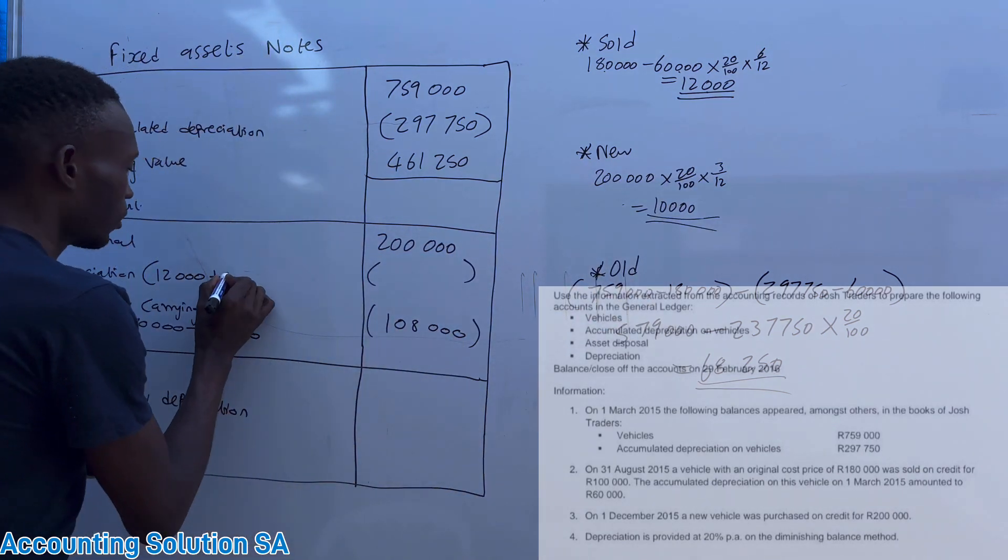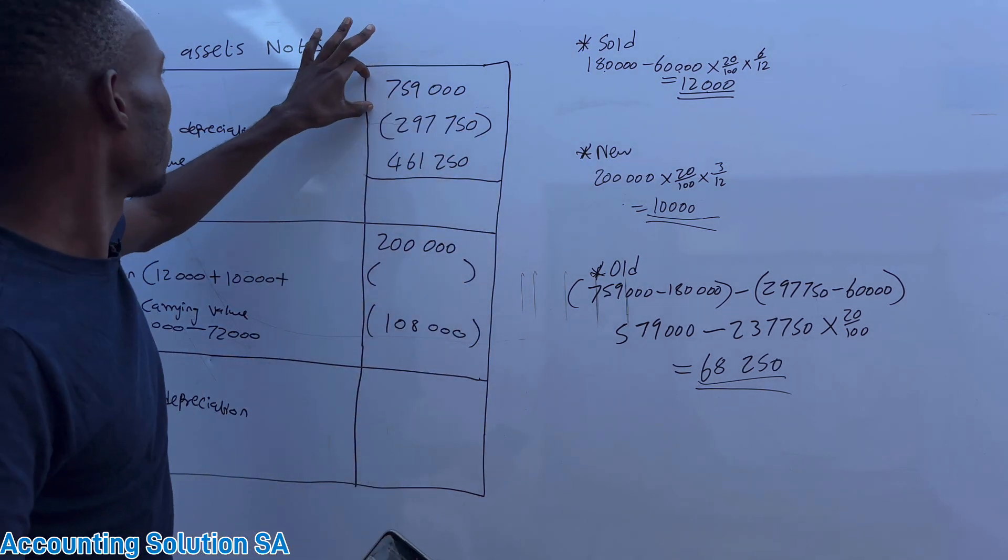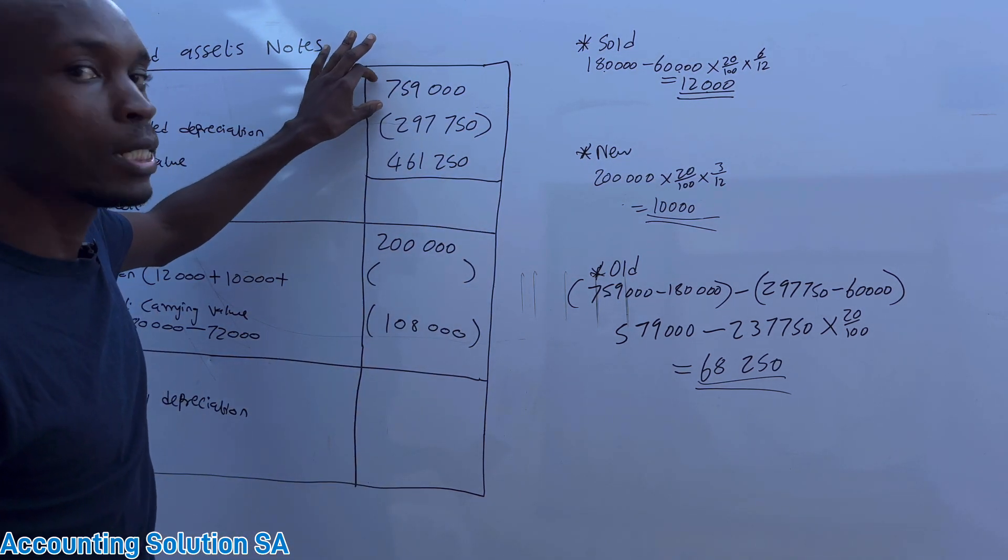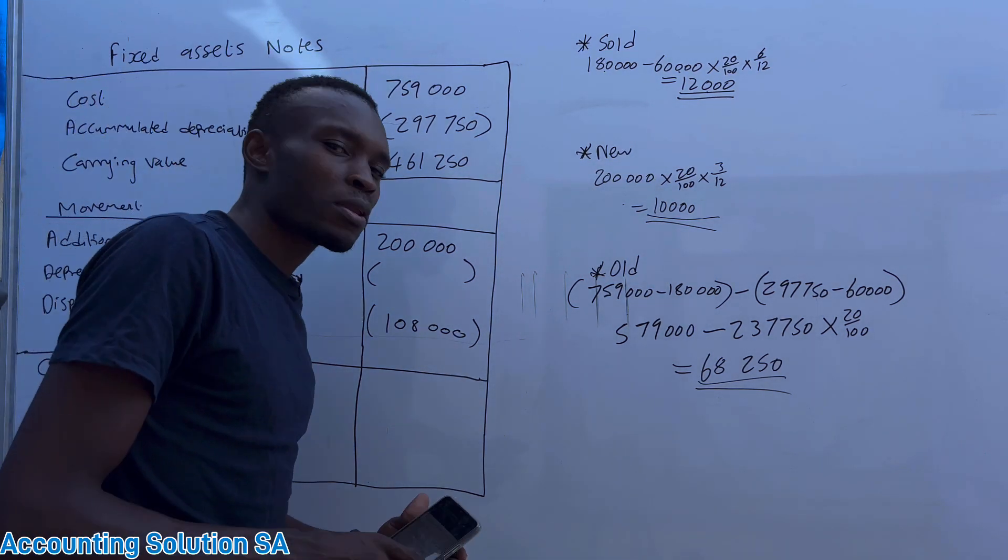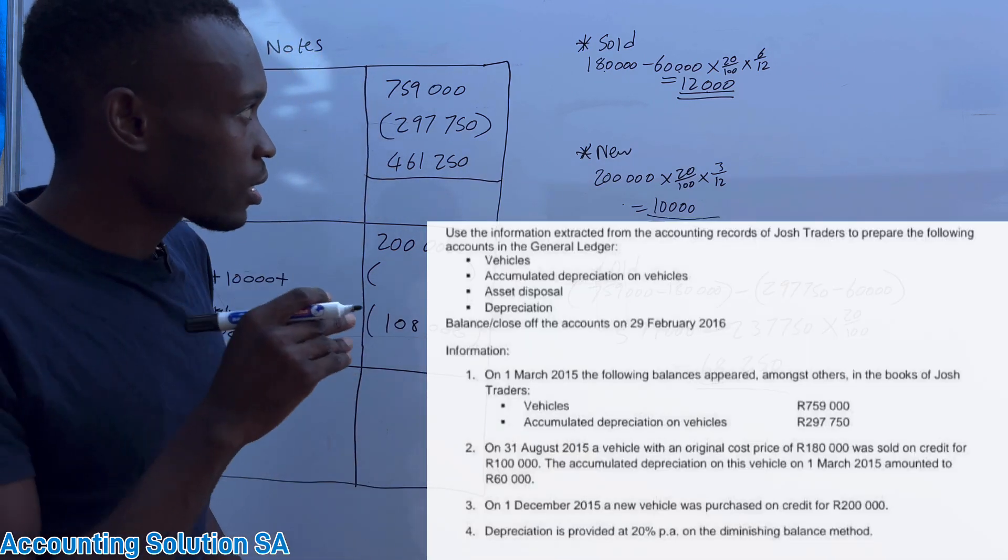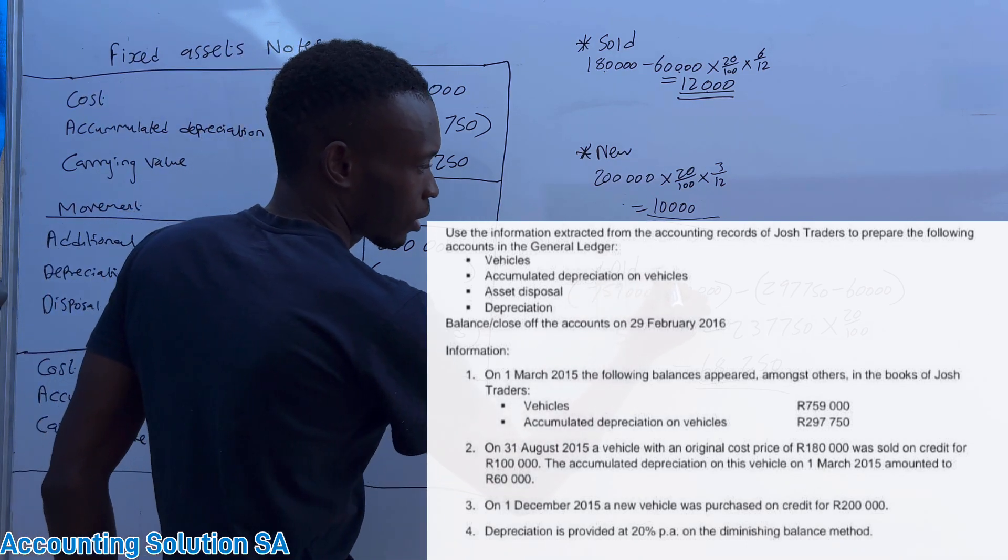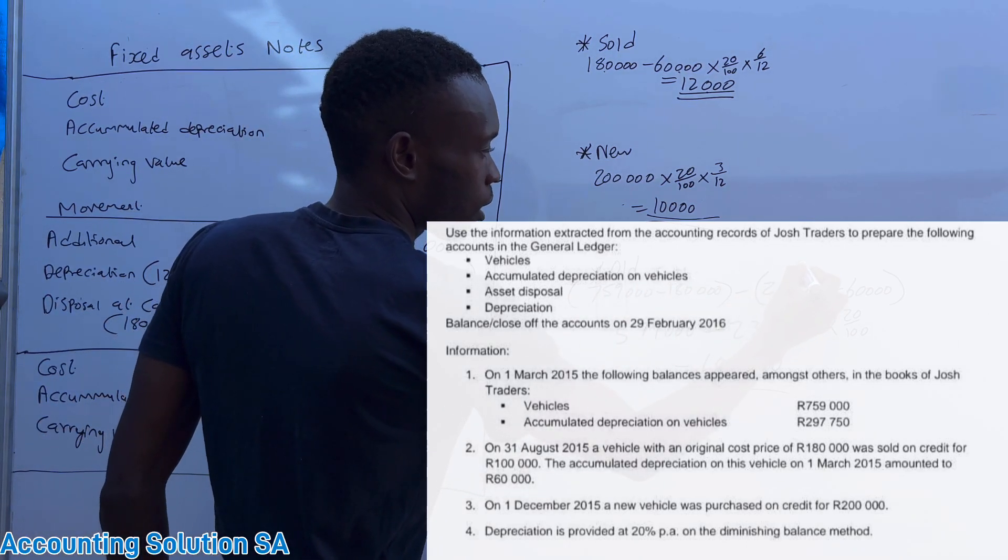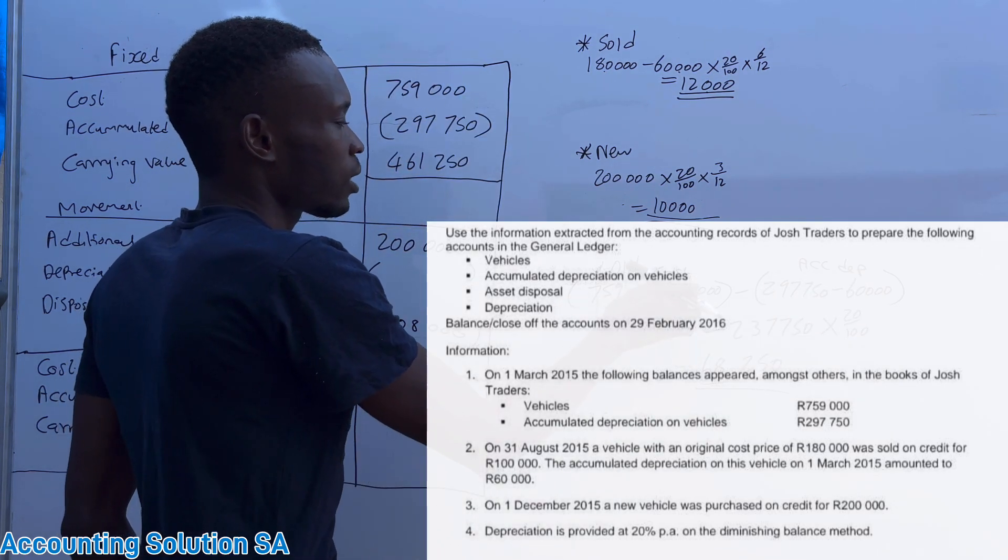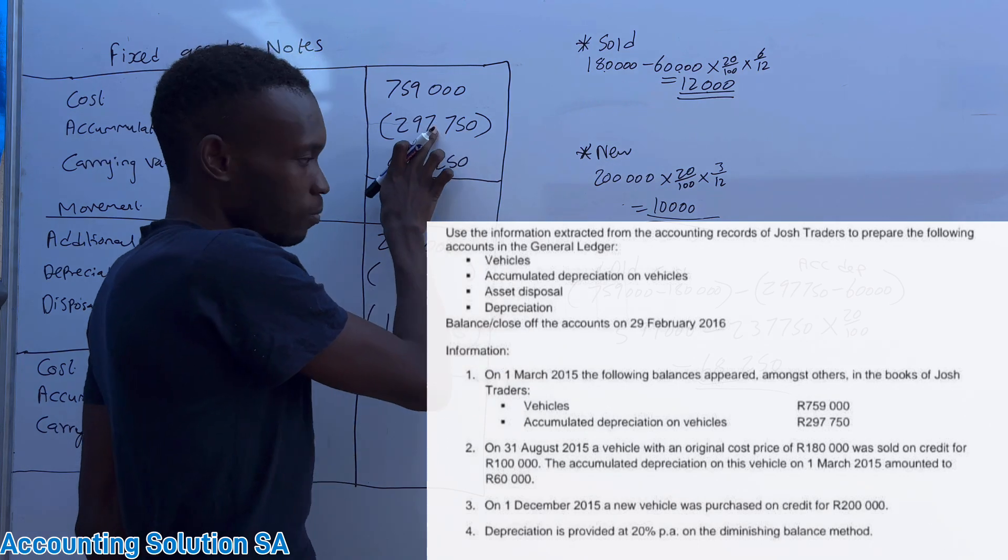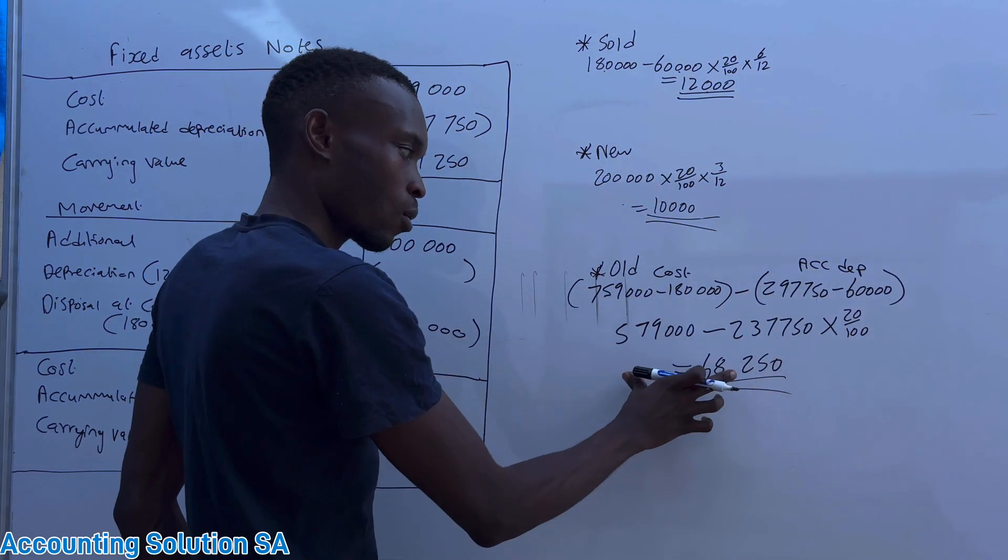And we get 10,000, then after that we have to focus on remaining vehicles that we have. So from remaining guys, you must first subtract the one that has been sold, but from both cost price and accumulated depreciation. We take the old one, this amount minus 180 cost price of this, and accumulated depreciation, and we minus the accumulated depreciation of old one. Then now we can calculate current value.